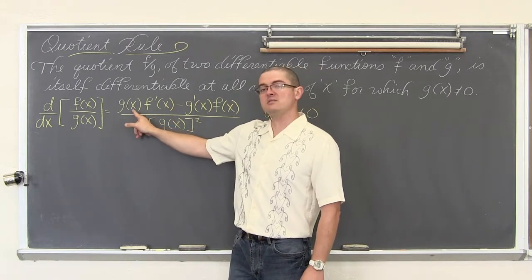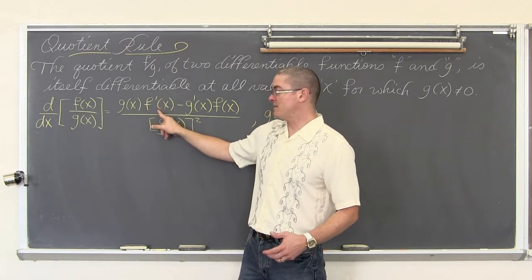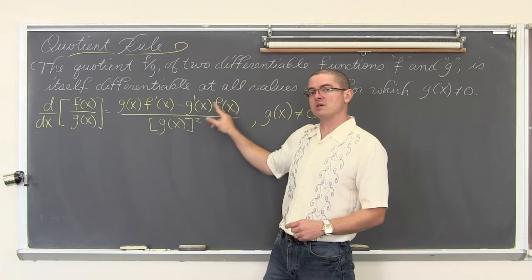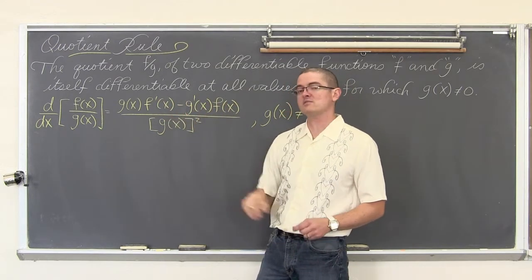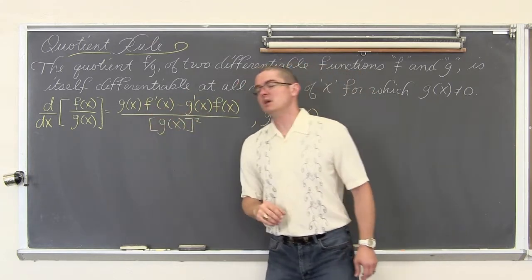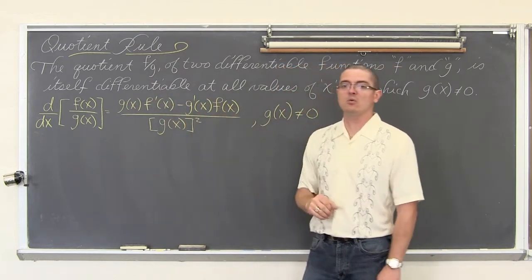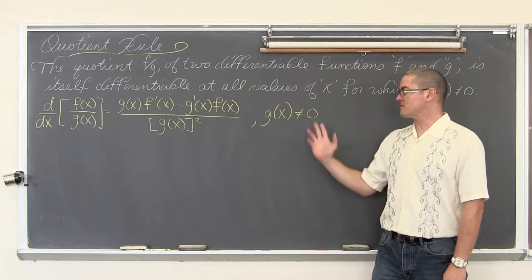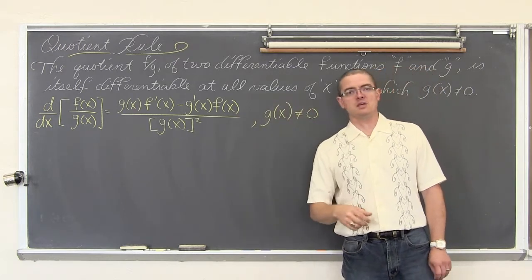We are going to take the denominator, put it first, take the derivative of the numerator first, minus the derivative of the denominator times the numerator. It is very important that you get this order correctly because in the middle here we have subtraction. Subtraction is not commutative. So if you happen to get this backwards you are going to get the wrong answer. Also, g of x cannot equal zero because then we are dividing by zero and that is undefined.